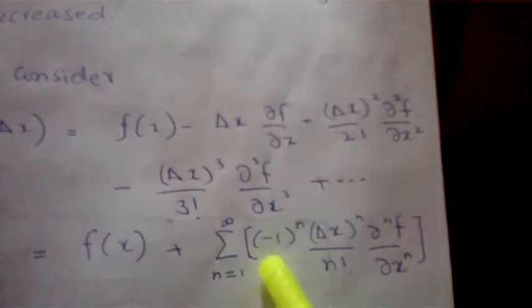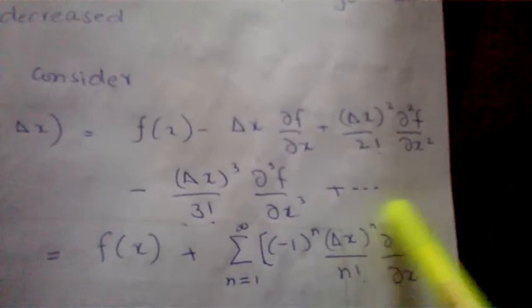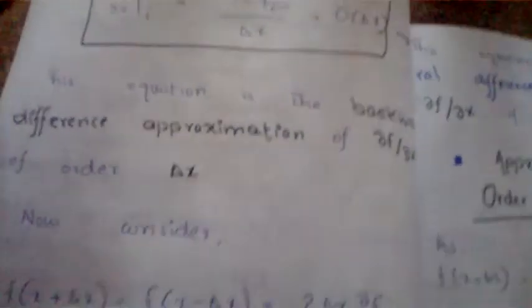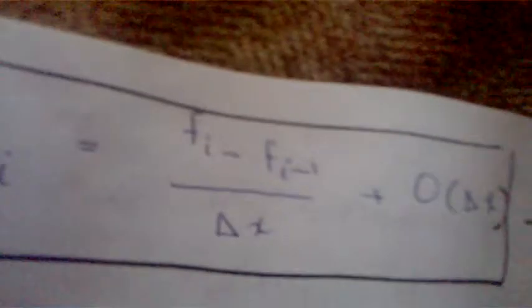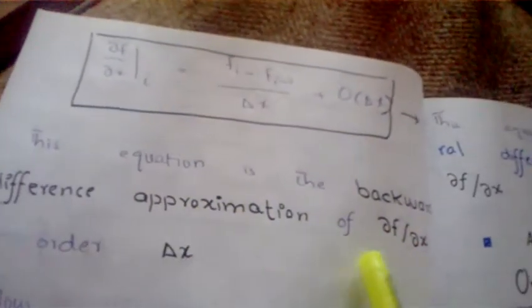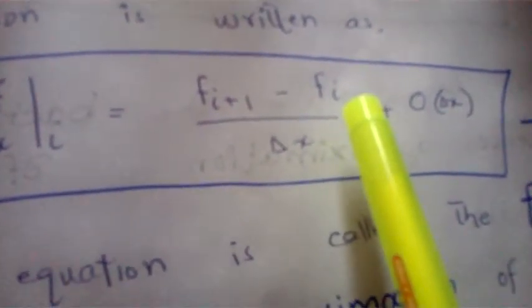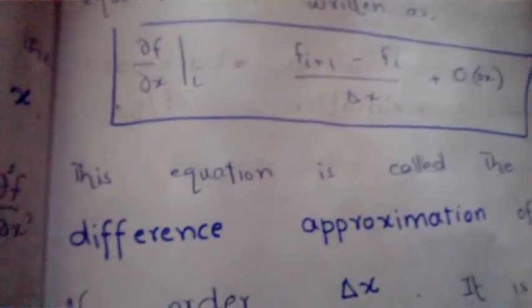Taking out ∂f/∂x from the expansion of f(x − Δx) as before, we get: ∂f/∂x = (f_i − f_{i−1}) / Δx + O(Δx). This is called the Backward Difference Approximation of ∂f/∂x of order O(Δx), because we move from index i to i−1 — moving backward — whereas in the forward difference we moved from i to i+1.